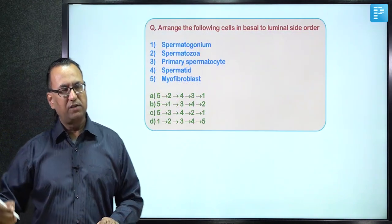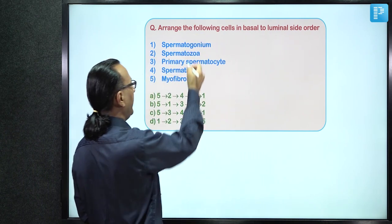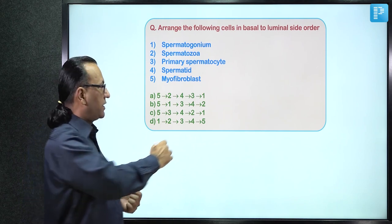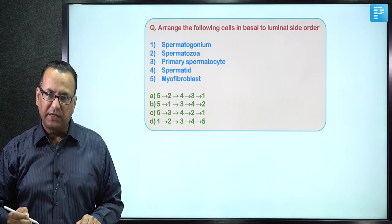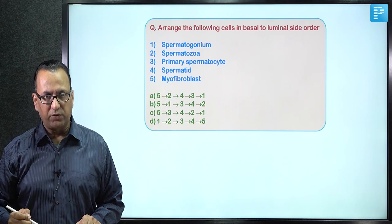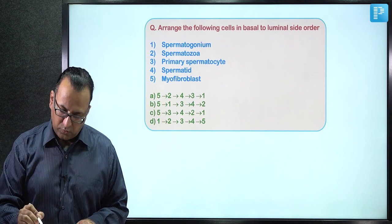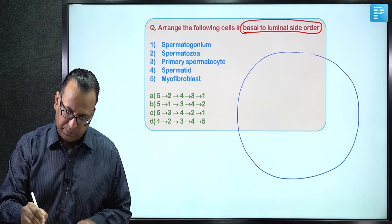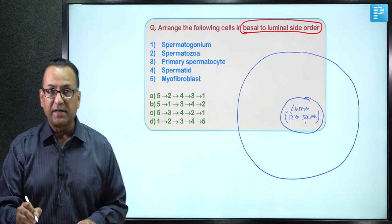This question asks us to arrange cells from the basal to luminal side in seminiferous tubules. The process of spermatogenesis takes 74 days and occurs in seminiferous tubules of the testes. The luminal side contains free spermatozoa, while cells undergoing mitosis and meiosis are found from basal toward luminal, eventually forming free sperm in the lumen.